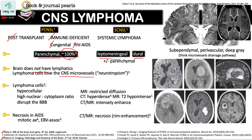This explains the predisposition of the masses in the subependymal, perivascular, and deep gray matter. If you think about the microvessels in terms of the drainage pathway, they have confluence in the periventricular region. It then drains into the subependymal draining veins.